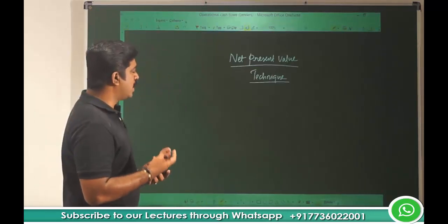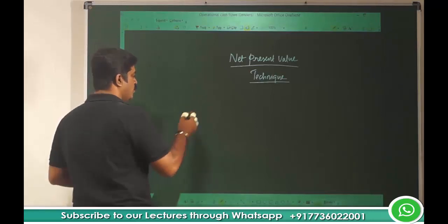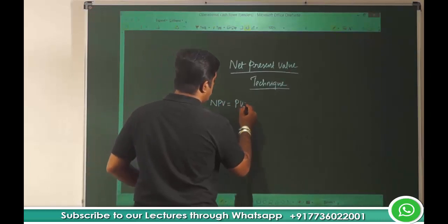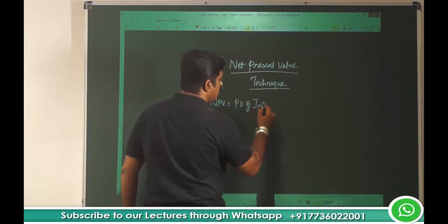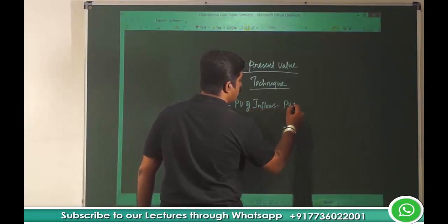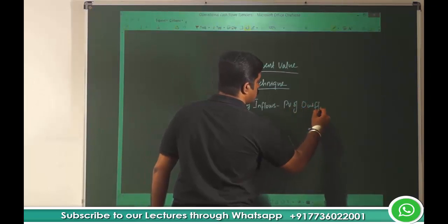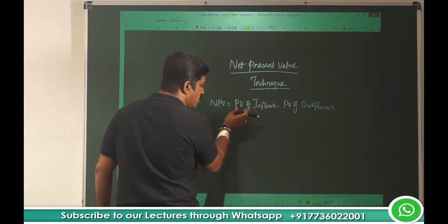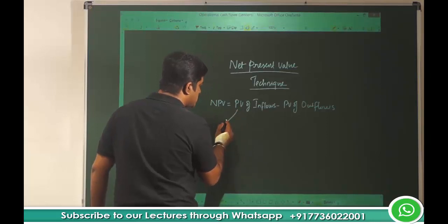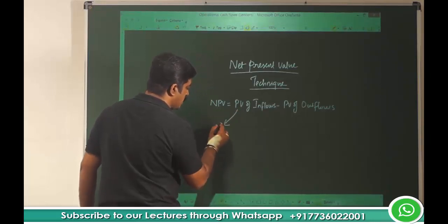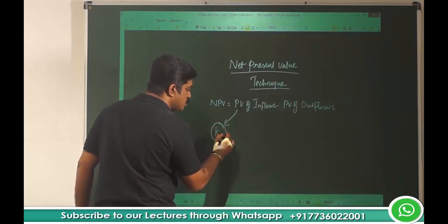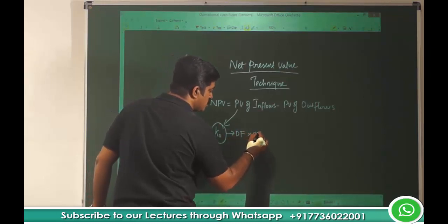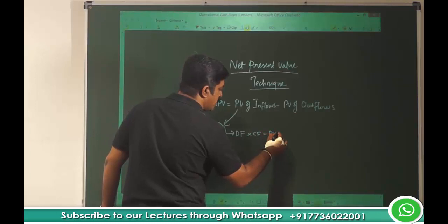Now how does the NPV tool help us in selecting the best project? In NPV, we basically have a formula: NPV is equal to PV of inflows minus PV of outflows — present value of inflows minus present value of outflows. We find out all the inflows and find out the present value by discounting the cash flows at the cost of capital. That cost of capital is used for finding the discounting factor, which is then multiplied with cash flows to find out the present value of inflows.